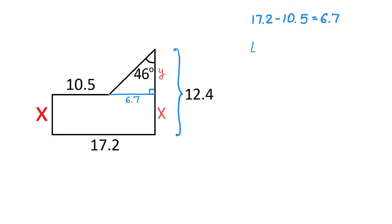So, let's write that tangent of 46 degrees equals 6.7 divided by Y. To solve this equation, we will multiply both sides by Y.